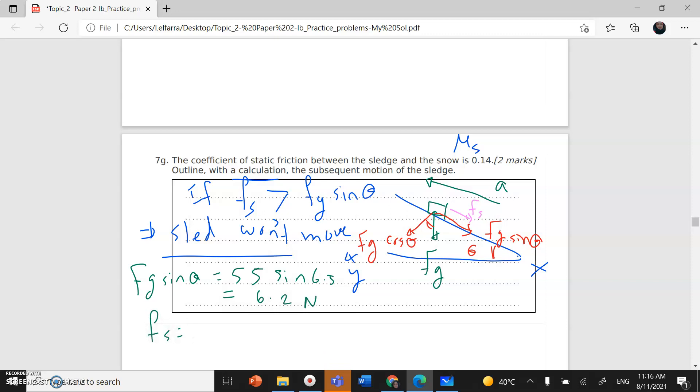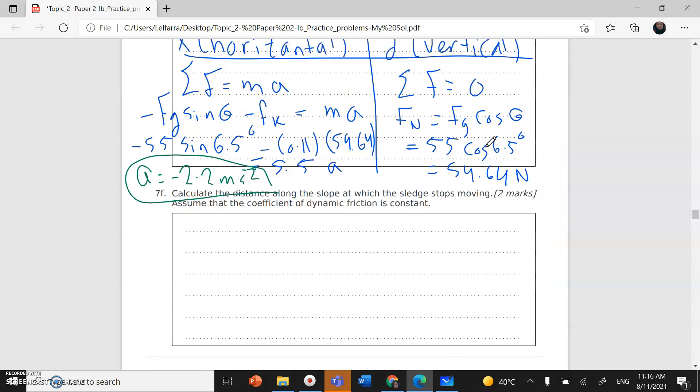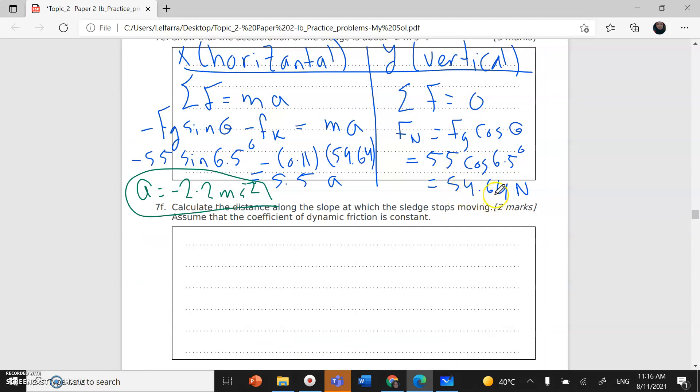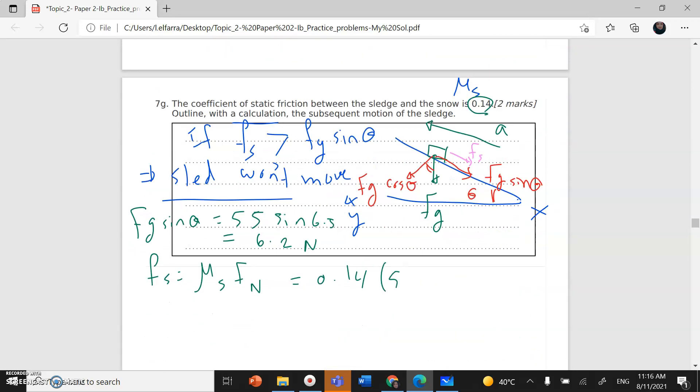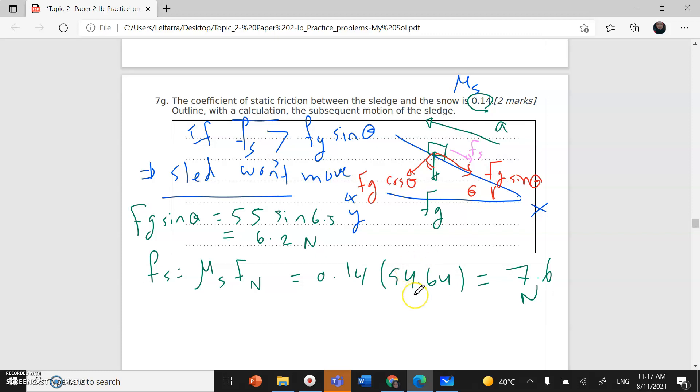Static friction equals mu S, the coefficient of static friction, times the normal force, which is given as 0.14 times 54.64 Newton. This gives us 7.6 Newton. So as you notice, F static is greater than the component of the weight in the horizontal direction or parallel to the surface. So the sledge won't move.